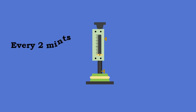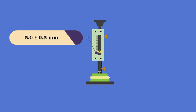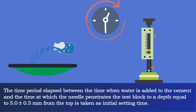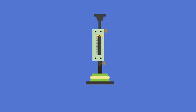Repeat the test every 2 minutes until the needle fails to pierce the block beyond 5.0 ± 0.5 millimeters measured from the bottom of the mold. The time elapsed between when water is added to the cement and when the needle penetrates to a depth of 5.0 ± 0.5 millimeters from the top is the initial setting time.